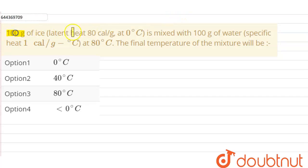100 grams of ice having latent heat 80 calories per gram at 0°C is mixed with 100 grams of water whose specific heat is 1 calorie per gram per °C at 80°C. The final temperature of the mixture will be...